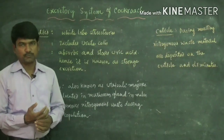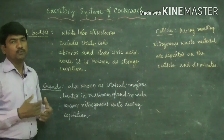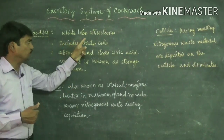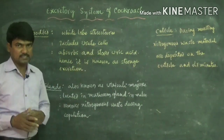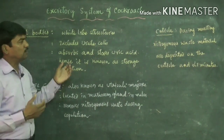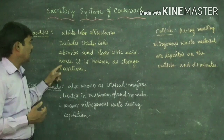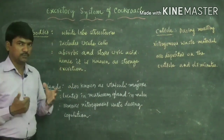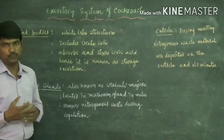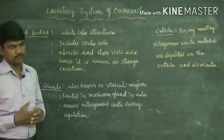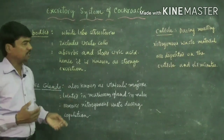The second part of the excretory system is fat bodies, located in the corpora adiposa, which is also present in the haemoleum. These white lobed structures contain uric cells that absorb and store excessive uric acid produced by the cockroach. This process of storing uric acid in uric cells is called storage excretion.